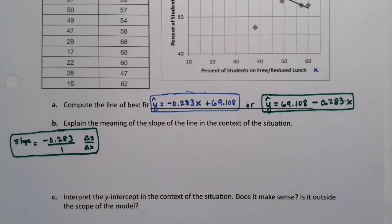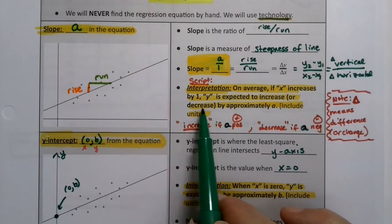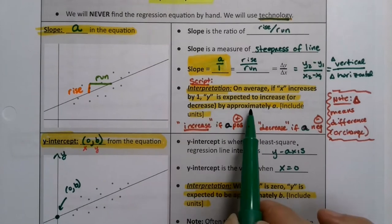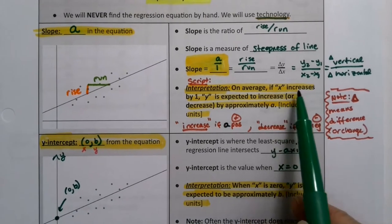So x is the percent of students on free-reduced lunch. So we're saying, if the percent of students on a free-reduced lunch in a school increases by 1, then we expect the y, the y which is the percent passing the math test, to decrease because it's negative by approximately a. And that's what we'll write. And again, it's written as a script.